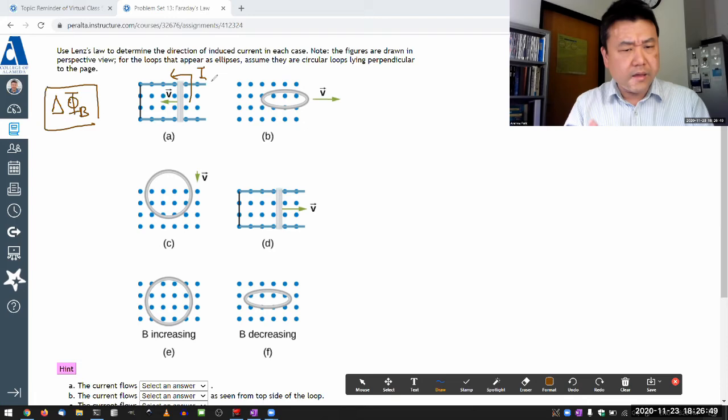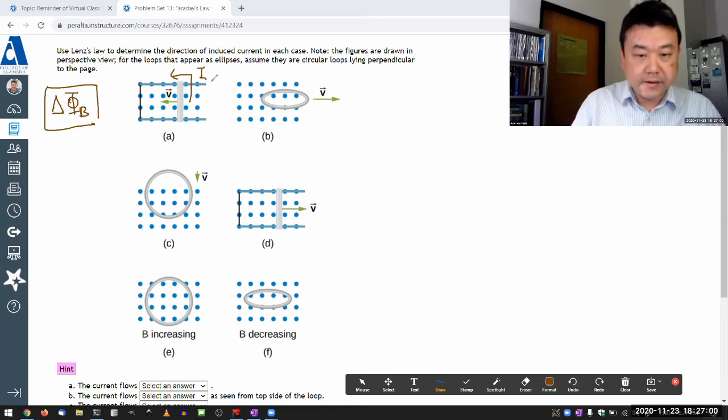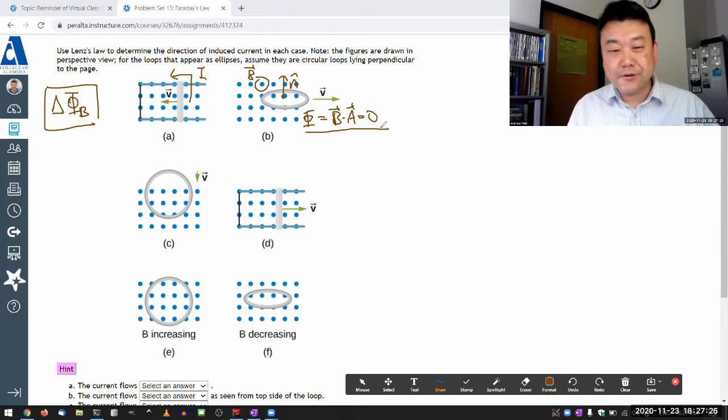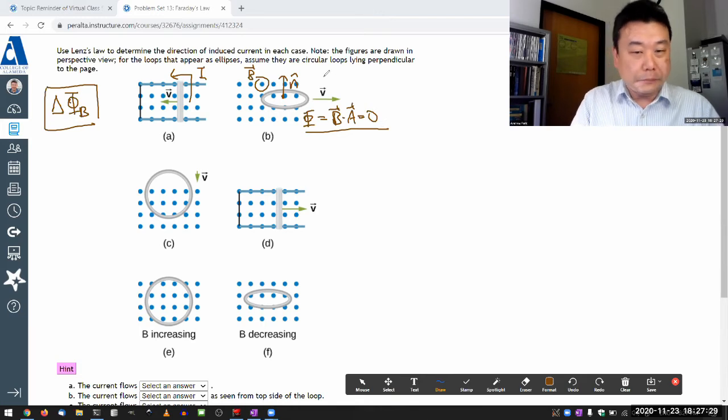Let me go through them all, and then I'll enter all the answers at the same time. B is easy, because with that orientation of loop, the magnetic flux is zero. Or more precisely, when I try to do the calculation φ = B · A, this is the direction of B, the direction of surface normal n̂ is in that direction, they're 90 degrees, so it's zero. So the magnetic flux is zero, it remains at zero, so change of magnetic flux is zero, no voltage, no current induced. So current is zero.